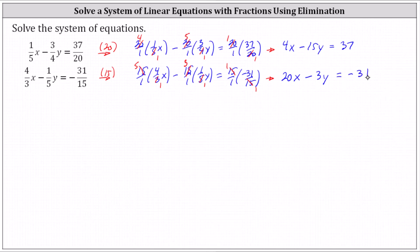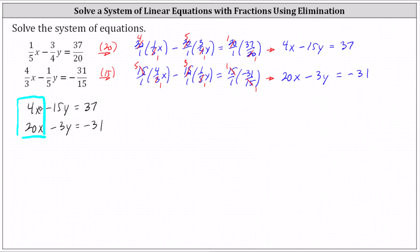And now we'll take this equivalent system of equations and eliminate x or y using the elimination or addition method. We can eliminate either the x terms or y terms. I'm going to focus on the x terms. Notice if we multiply the first equation by negative 5, we would have negative 20x in the first equation, and we already have positive 20x in the second equation, so the x terms will be opposites.